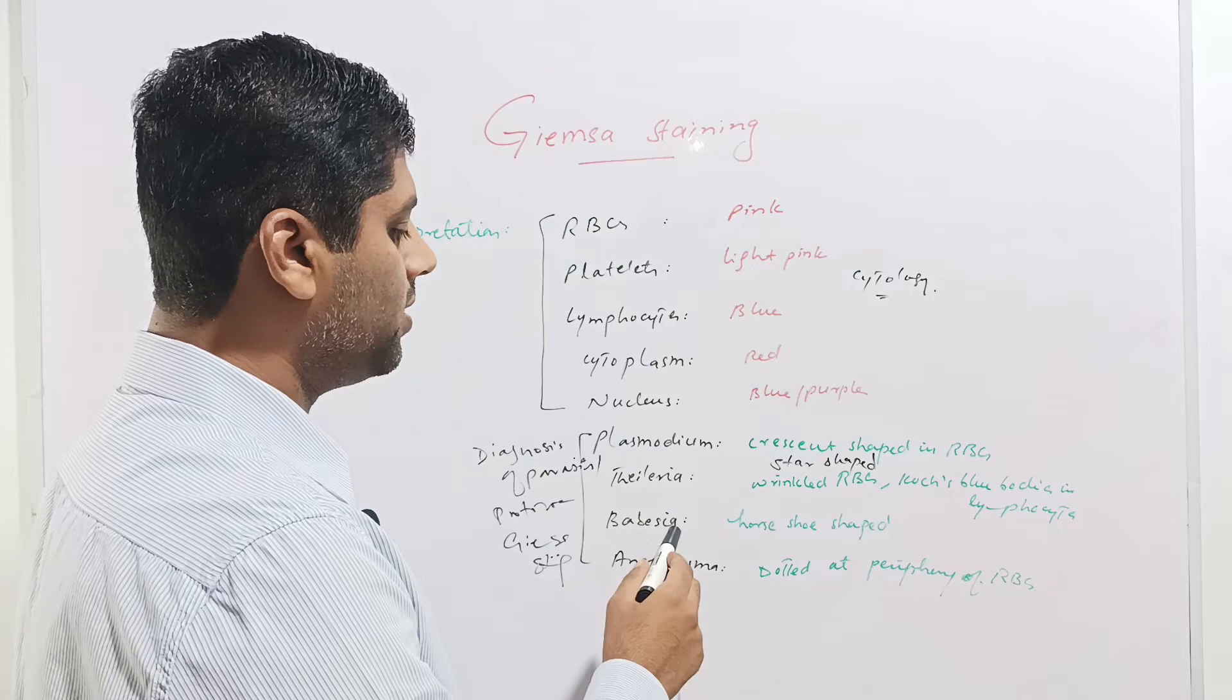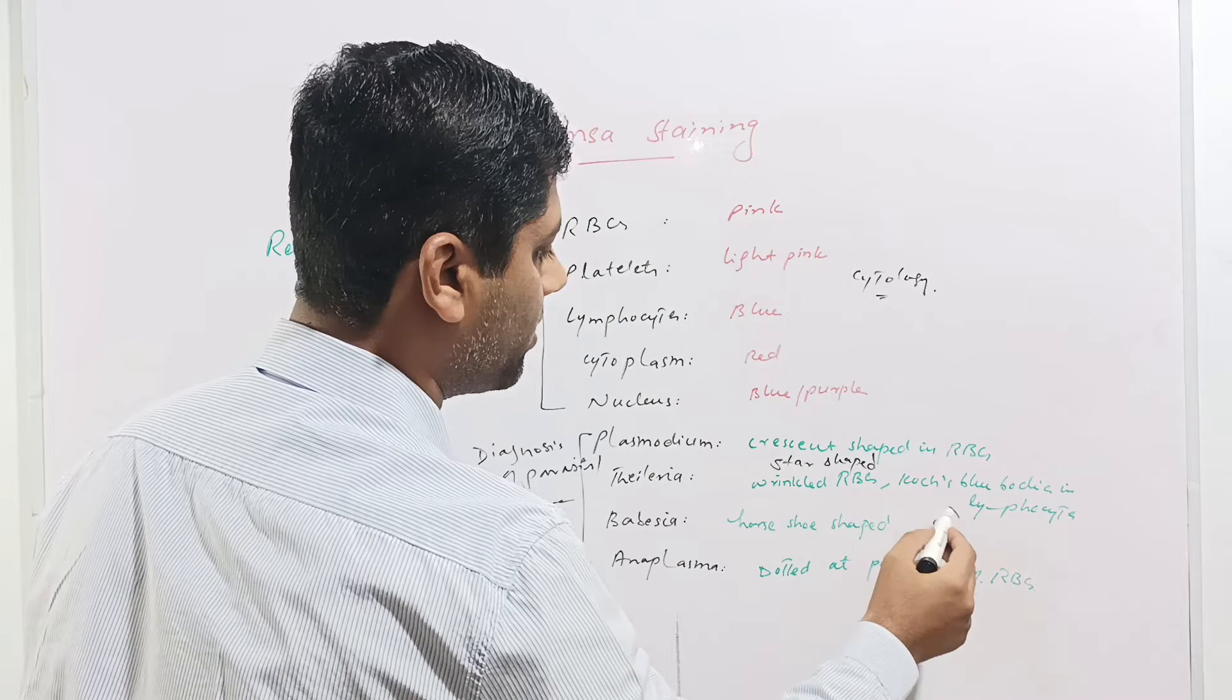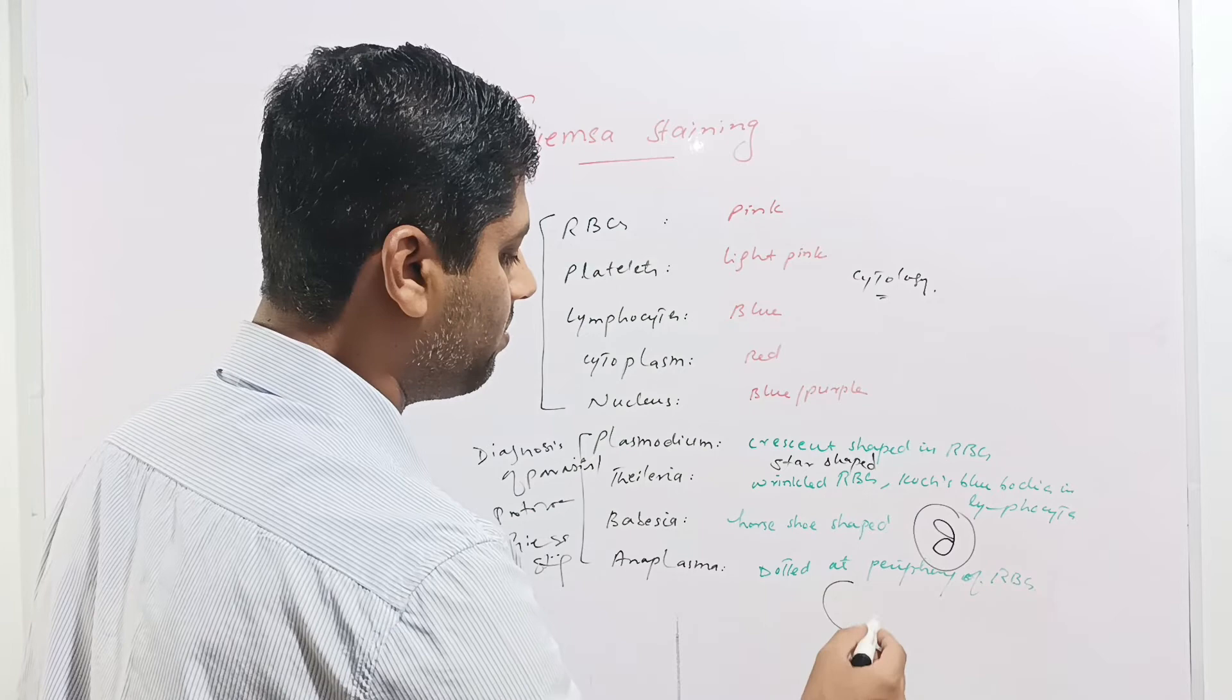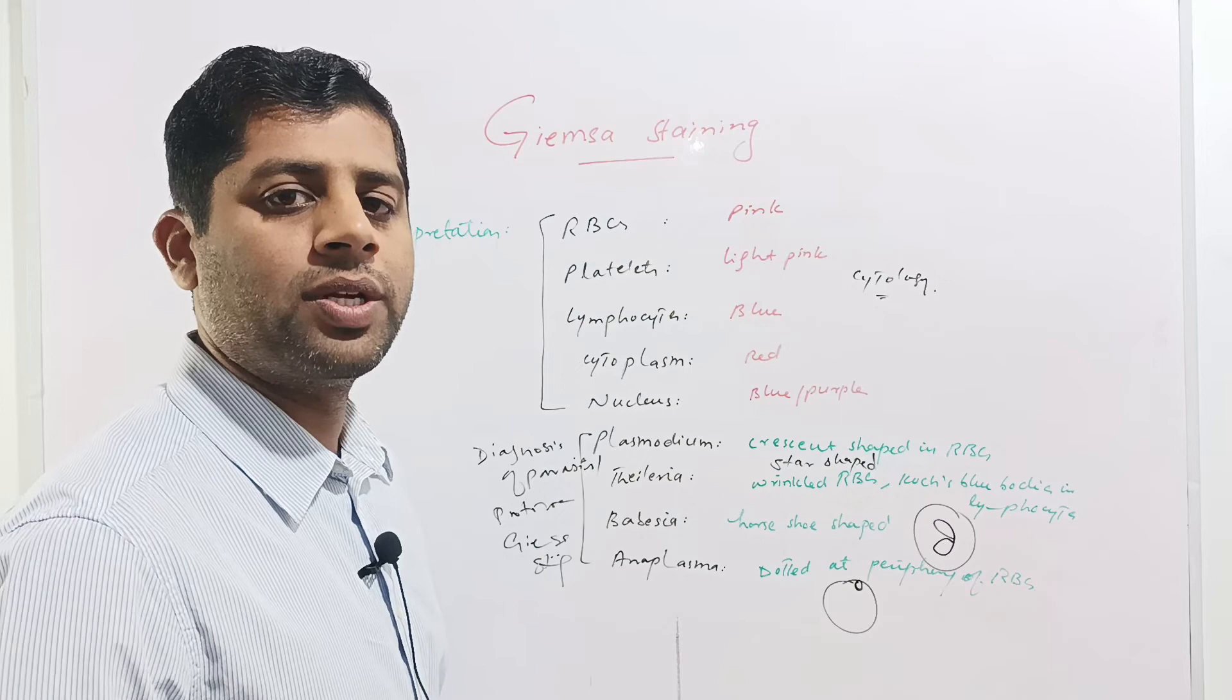Babesia is seen as horse shoe shaped in the red blood cells. This is the appearance of babesia in the red blood cell. Anaplasma is seen as dotted at the periphery of red blood cells. For example, this is the red blood cell and anaplasma is seen at the peripheral side of the red blood cell. These are diagnostic features of the parasites or protozoans using Giemsa staining technique.